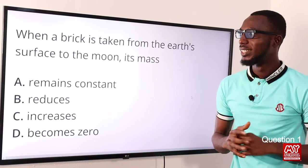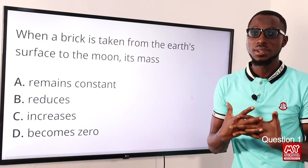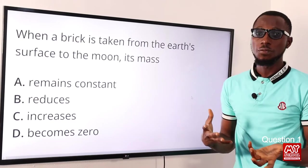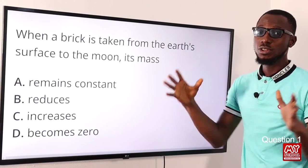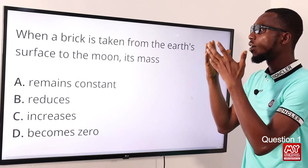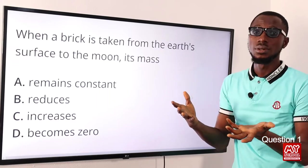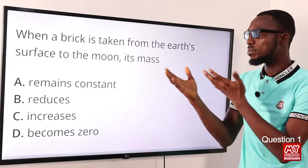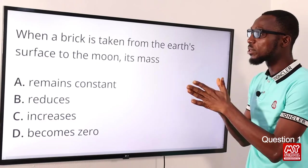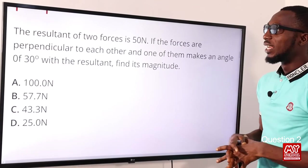Question one: when a brick is taken from the earth's surface to the moon, what happens to its mass? Mass is the quantity of matter a body contains — it does not change. What changes is the weight, which is the earth's pull on an object. On the moon the body becomes weightless, but mass remains constant. The correct option is A: its mass remains constant.